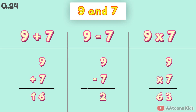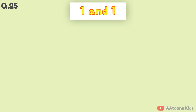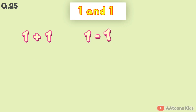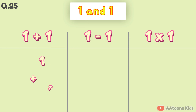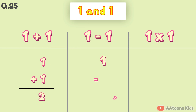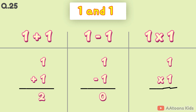The two numbers are 1 and 1. 1 plus 1 is 2. 1 minus 1 is 0. 1 times 1 is 1.